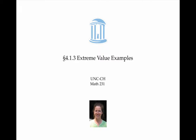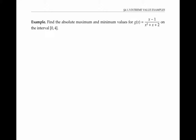In this video, I'll work through two examples of finding extreme values, that is, maximum values and minimum values of functions. In the first example, we're asked to find the absolute maximum and minimum values for this rational function g of x on the interval from zero to four. These maximum and minimum values could occur at critical numbers in the interior of the interval, or they could occur at the endpoints of the interval.